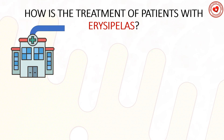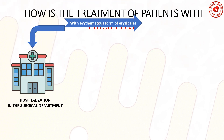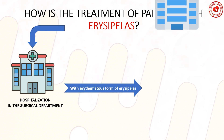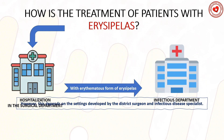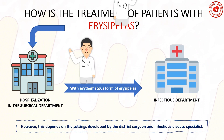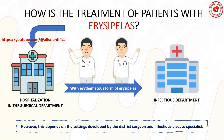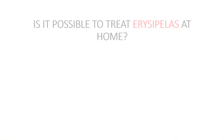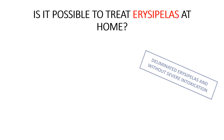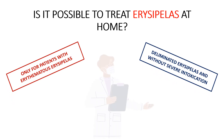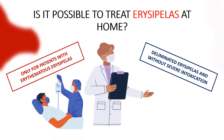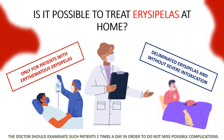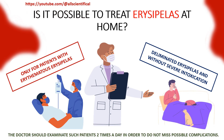How is erysipelas treated? All patients with erysipelas are subject to hospitalization in the surgical department. Patients with the erythematous form are often treated in the infectious disease department, depending on local settings. Home treatment can be carried out only in patients with a delimited form and without severe intoxication. The doctor should examine such patients twice a day to watch for possible complications.